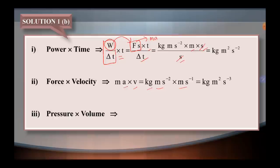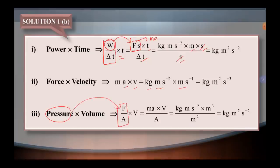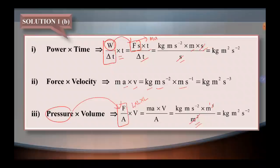Question number 3 is about pressure multiplied with volume. The formula for pressure is force divided by area, multiplied with volume. Volume is length multiplied with length multiplied with length. Force is mass times acceleration. Unit for mass is kilogram, unit for acceleration is meter per second squared, unit for volume is meter cube, and unit for area is meter square. Kita boleh cancel meter squared dengan meter cube, so yang tinggal meter power of 1. Kilogram meter multiplied with meter — index kita tambahkan, so kita akan dapat meter power of 2 and second is negative 2. The answer is kilogram meter power of 2 per second power of 2.